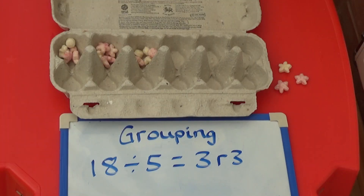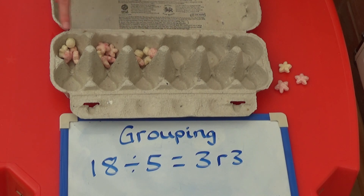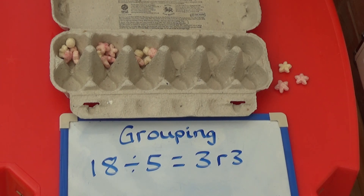Here I've worked out 18 divided by 5 as grouping. When I shared 18 pieces of cereal into groups of 5, 3 sections of the egg box were filled with a remainder of 3 pieces. So 18 divided by 5 equals 3, remainder 3.